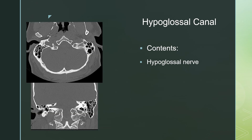The hypoglossal canal contains the hypoglossal nerve. To find this, you look for the level of the clivus, then look for the jugular fossa — the hypoglossal canal is that opening in the bone between the clivus and the jugular fossa. Here's the right hypoglossal canal, the left hypoglossal canal, and on coronal imaging, here is that bony canal at the level of the skull base on the right and on the left.